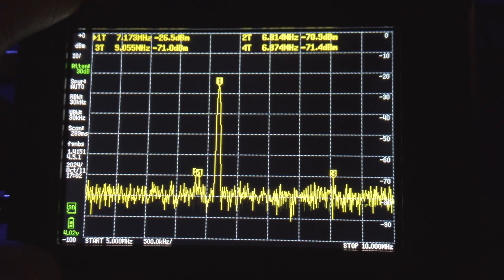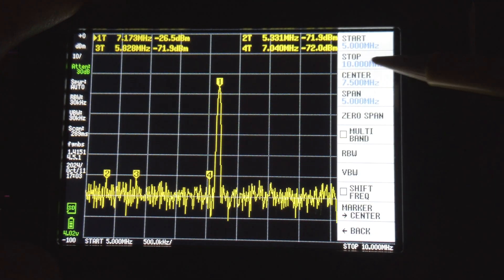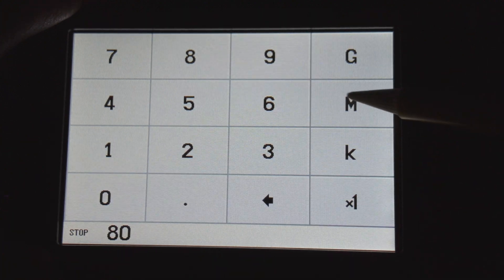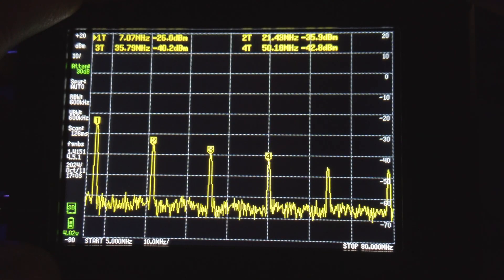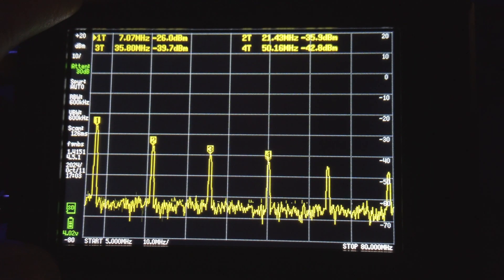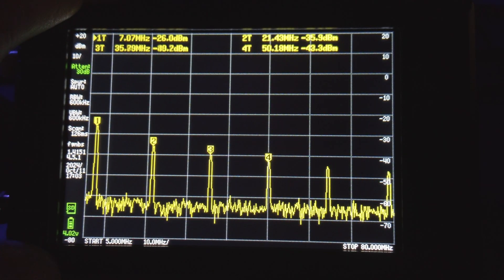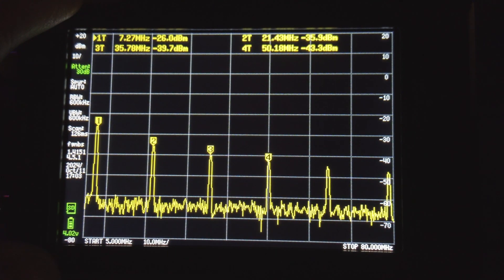Now let's zoom out a bit and see more of the spectrum. Let's zoom out so we can see up to 80 MHz. Now wait, what the heck are all those other signals? Those are in fact spurious emissions. Those are the unwanted harmonics that are being generated.